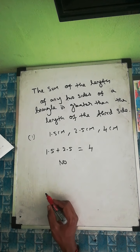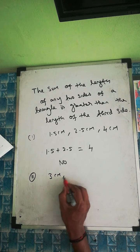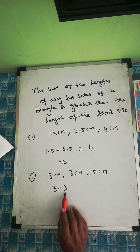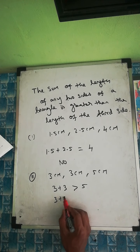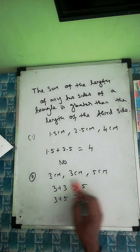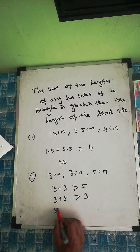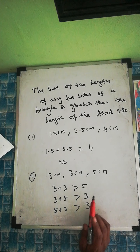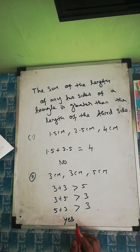Since the sum equals the third side rather than being greater, the answer is no — we cannot make a triangle with these measurements. Second question: sides of 3 cm, 3 cm, and 5 cm. Take 3 plus 3 equals 6, which is greater than 5. Then 3 plus 5 equals 8, which is greater than 3. And again 5 plus 3 equals 8, which is greater than 3.